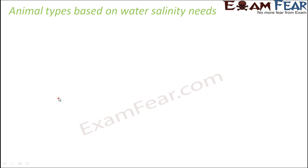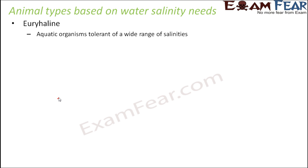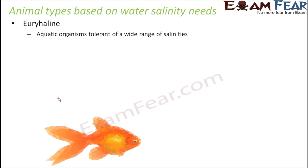Based on which type of animals can survive in which type of water, animals have been categorized into two types: Euryhaline and Stenohaline. Euryhaline organisms are those aquatic organisms which are tolerant of a wide range of salinity. Salinity is the concentration of salt in water. There are many different types of aquatic environments — for example in oceans, the concentration of salt is very much higher compared to that of fresh water.